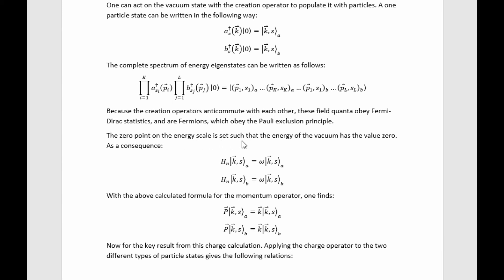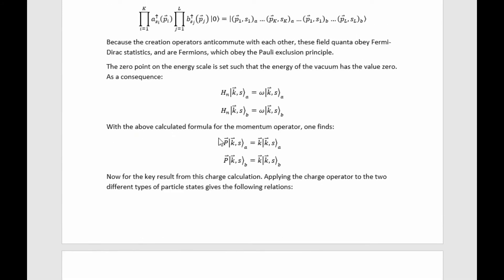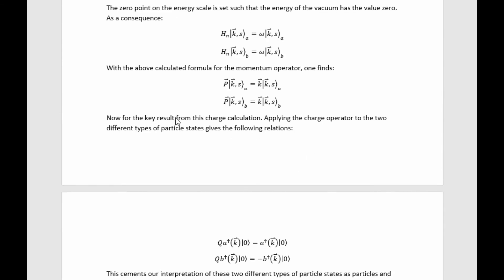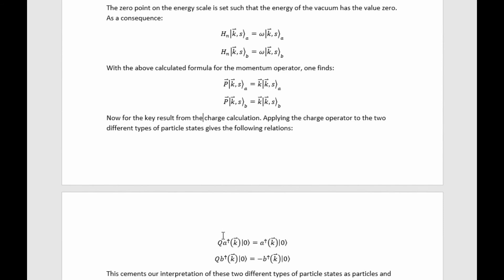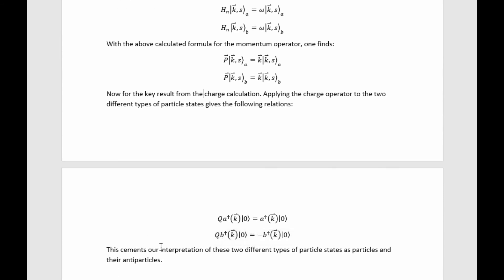The zero point on the energy scale is set such that the vacuum has energy zero, giving these relations. Applying the momentum operator to these states gives an eigenvalue corresponding to the momentum. For the key result from the charge calculation: applying the charge operator to the two different types of particle states gives results with opposite charges, cementing the interpretation of the two types as particles and antiparticles.